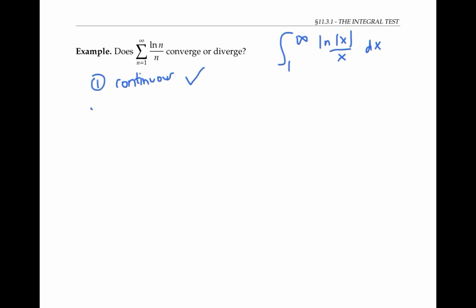It's also a positive function, since we know that ln of x is greater than zero for x bigger than one, and therefore this quotient is greater than zero.